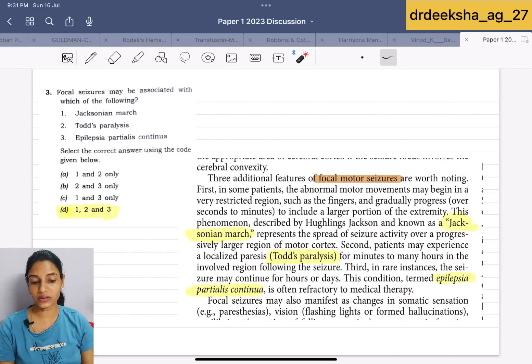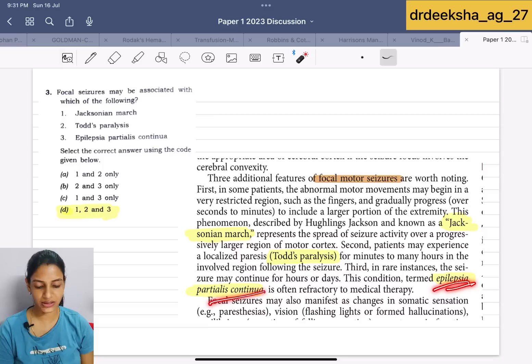Next, they are talking about the focal seizures, which is true about it. In the focal seizures, there are 3 additional features that it has no association with the Jacksonian march. It has the association with Todd's paralysis and it has the association with epilepsia partialis continua. Answer for this is 1, 2 and 3.